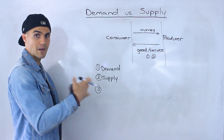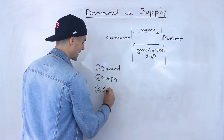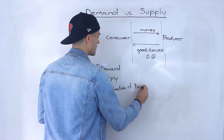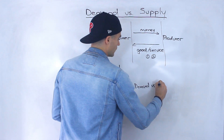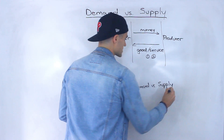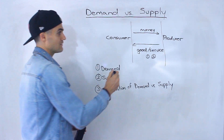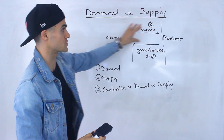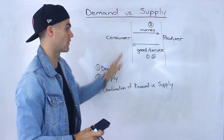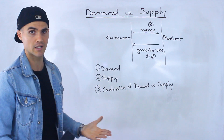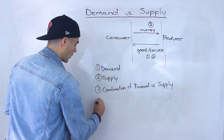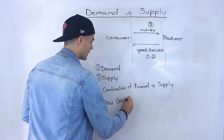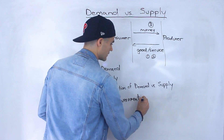Once we cover demand and supply separately, we're going to combine them and look at both in combination — demand versus supply together. When we combine demand and supply, that's going to give us the price of a certain good or service, determining how much money a consumer gives a producer for that good or service. We're going to talk about things like market equilibrium, and then finally we'll talk about how government can affect demand and supply.